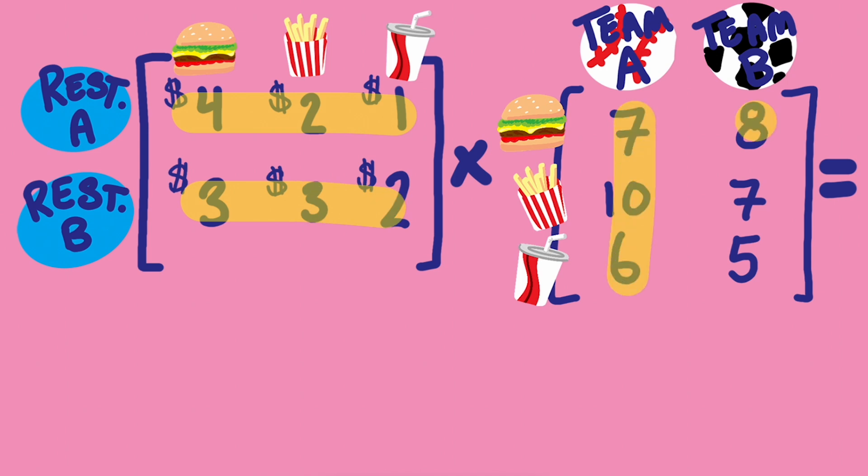This works as long as the length of the rows in the first match up with the length of the columns of the second. If they don't match up then it means you're missing information, like the cost of shakes for each restaurant or the number of shakes for each team, so it's impossible to calculate the total amounts.